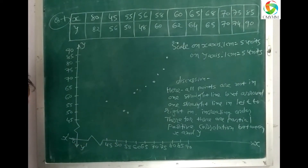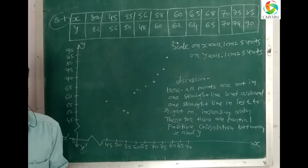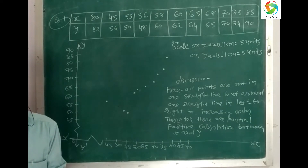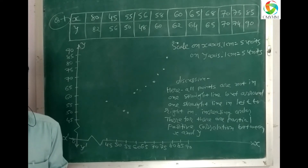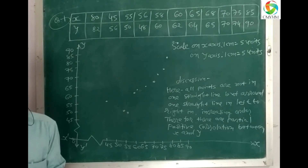Question 1: Draw a scatter diagram for the given data and discuss the correlation between two variables. Here x and y values are given.